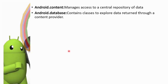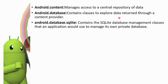android.database contains classes to explore data returned through a content provider. The database is also used in the content provider as a data sharing mechanism, so the content provider can access the data. android.database.sqlite contains SQLite database management classes that an application would use to manage its own private database.